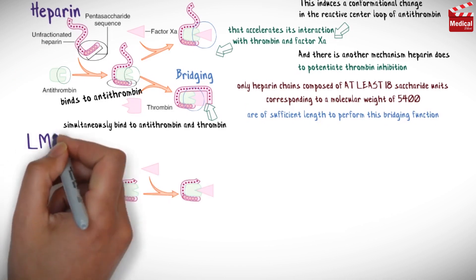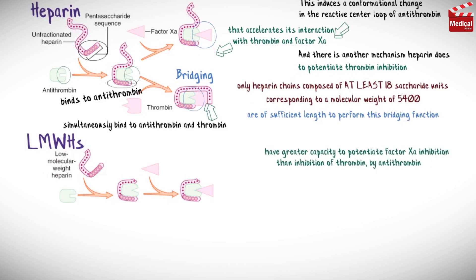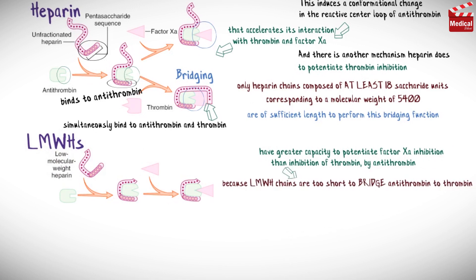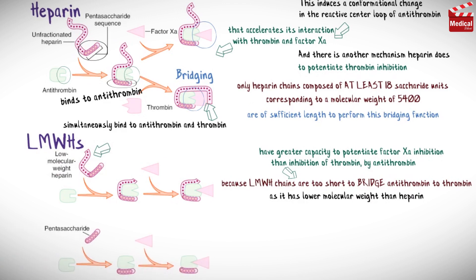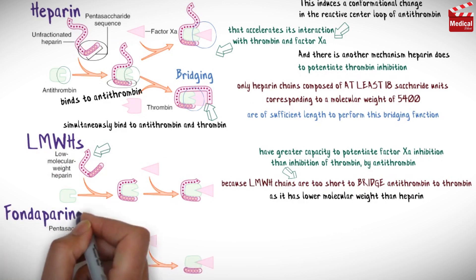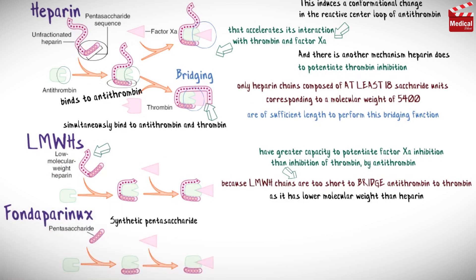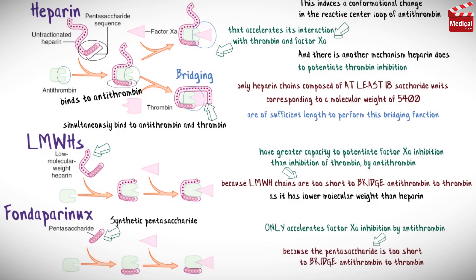Low molecular weight heparins have greater capacity to potentiate factor XA inhibition than inhibition of thrombin by antithrombin, because their chains are too short to bridge antithrombin to thrombin, as they have lower molecular weight than heparin. Fondaparinux, being a synthetic pentasaccharide, only accelerates factor XA inhibition by antithrombin, because the pentasaccharide is too short to bridge antithrombin to thrombin.